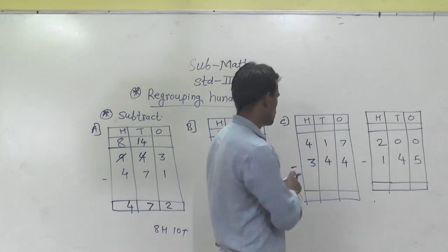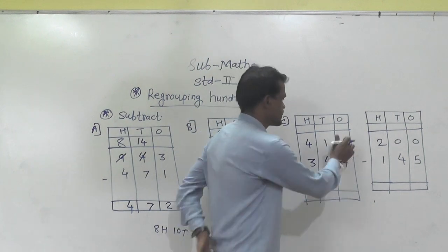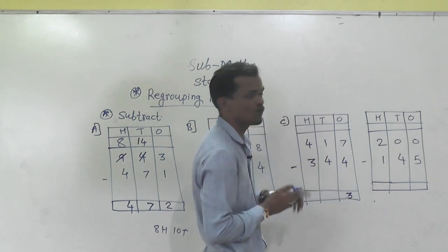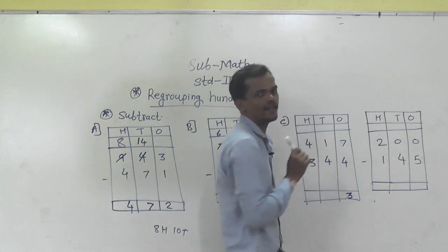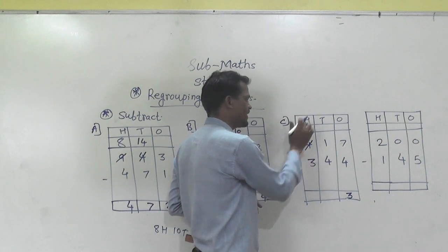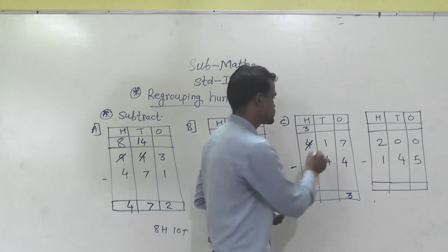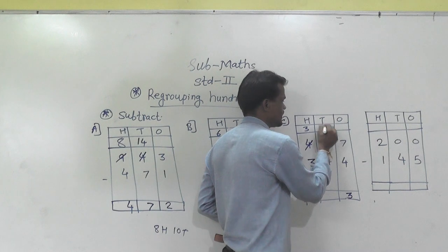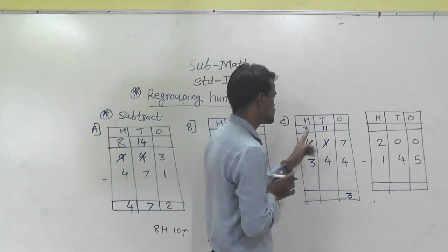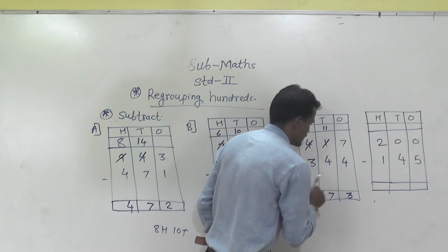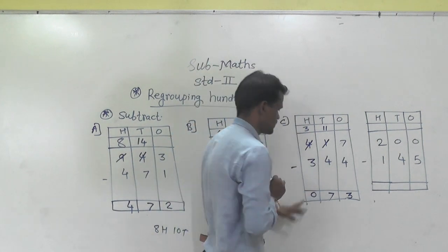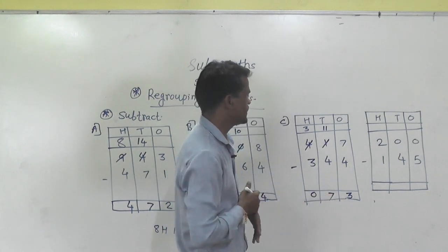Next example: 417 minus 344. Starting from ones: 7 minus 4 is 3. Then 1 minus 4 is not possible because 1 is smaller than 4. So regroup this 400 into 300 and 10 tens, and add those 10 tens into the 1 ten to get 11 tens. Now 11 minus 4 is 7. Then 3 minus 3 is 0. So 73 is the answer.